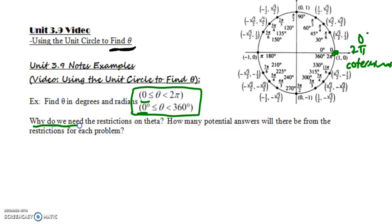So that is why you really need the restrictions, because there's infinite answers. But how many potential answers will there be from the restrictions that we chose? I'm going to erase what I did here on the unit circle and talk about something else.